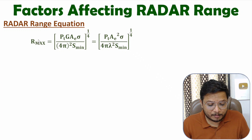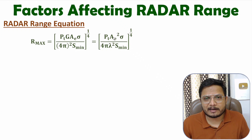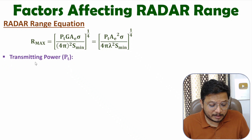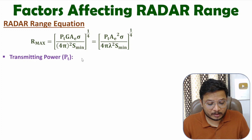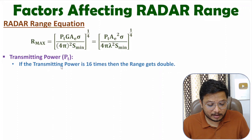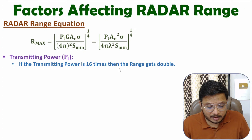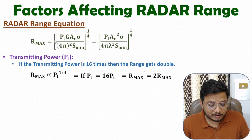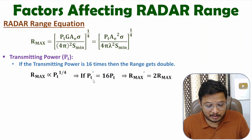The first factor is transmitting power PT, on which radar range is directly proportional. Radar range is proportional to PT raised to 1/4. So as you increase transmitting power, you increase the range of radar. If you increase transmitting power by 16 times, you will be increasing range by double.